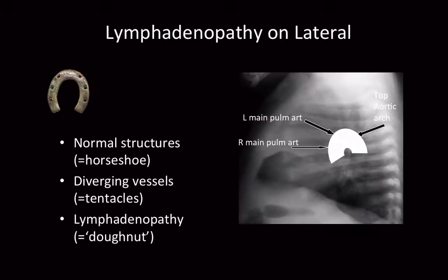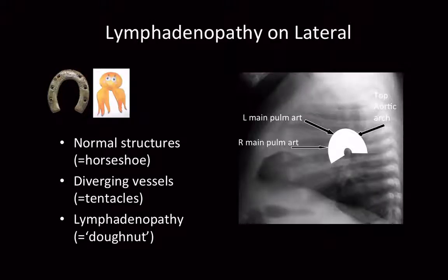For those of you who don't know what a horseshoe is — it's a metallic structure used on a horse's hoof. I've added an octopus because the vessels extending below the horseshoe look like tentacles; they basically diverge in all directions, including in and out of the page.